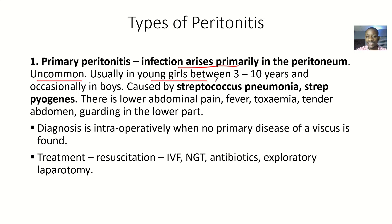Primary peritonitis is usually seen in young girls between 3 to 10 years of age, and occasionally it occurs in boys. It is caused by Streptococcus pneumoniae and Streptococcus pyogenes.